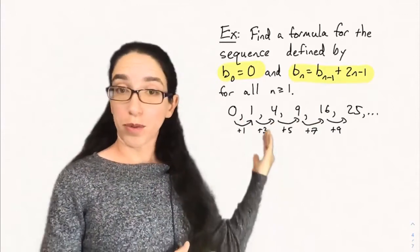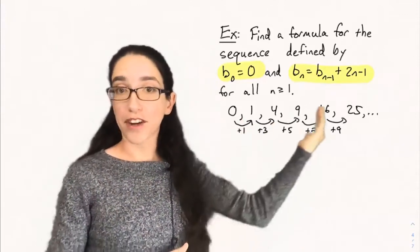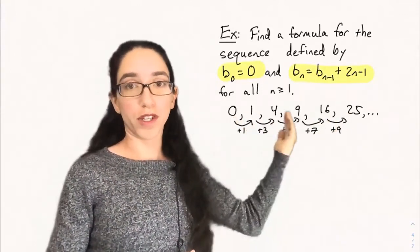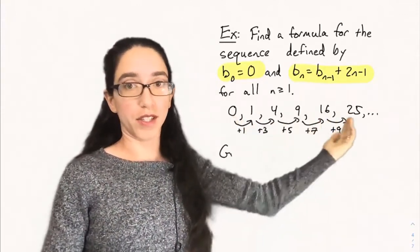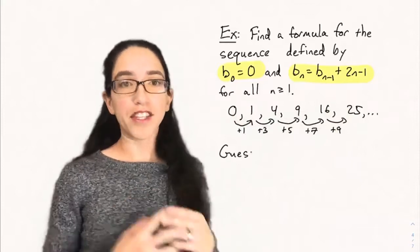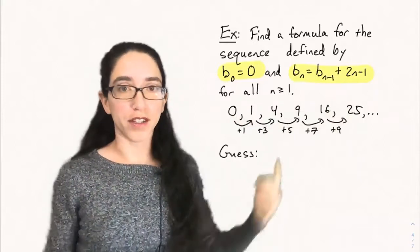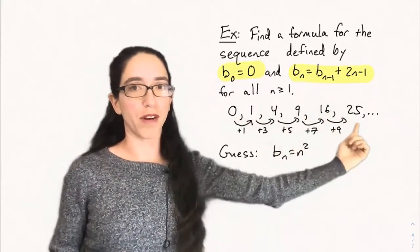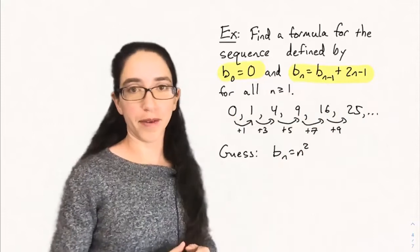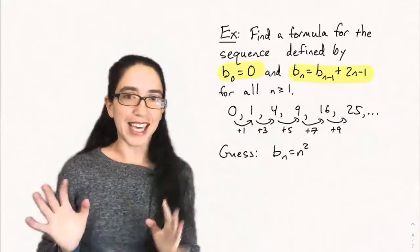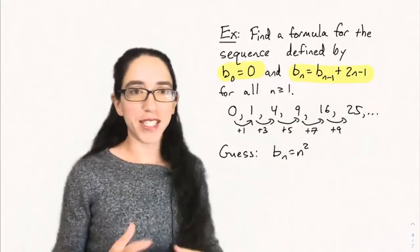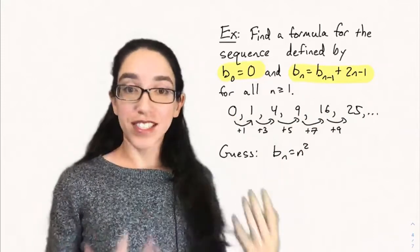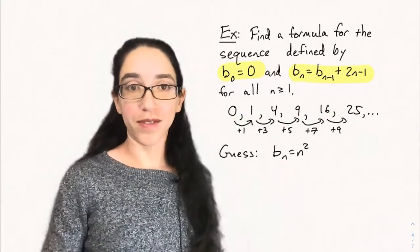You probably see a pattern: 0, 1, 4, 9, 16, 25 — these are the perfect squares: 1², 2², 3², 4², 5², etc. So let's guess that bₙ is always n squared, and let's see if we can prove this — that n² is an explicit formula satisfying this recursion.